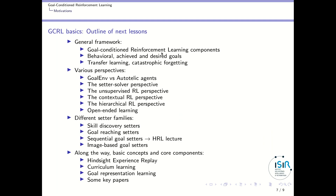Now let's look at what we will cover during these lessons. In the first series of about ten lessons, we will see the basics: the general framework of goal-conditioned reinforcement learning, important notions such as behavioral, achieved, and desired goals, and we will study transfer learning and catastrophic forgetting. We will then show different perspectives on goal-conditioned RL — settings where the environment provides the goal versus autotelic agents that define their own goals, the setter-solver perspective, unsupervised RL, contextual RL, and the hierarchical RL perspective, where the low-level policy is conditioned on a goal coming from a high-level policy.